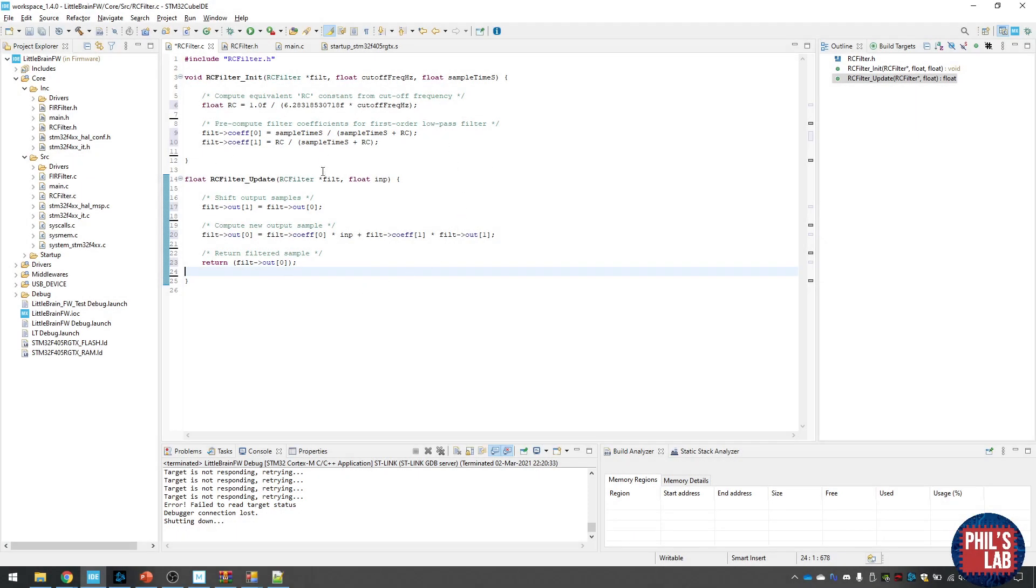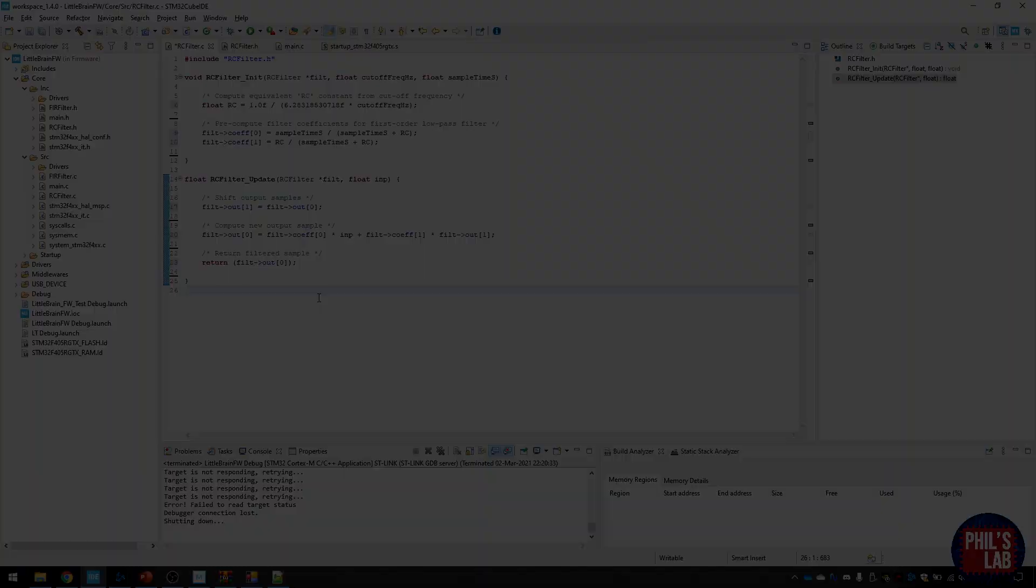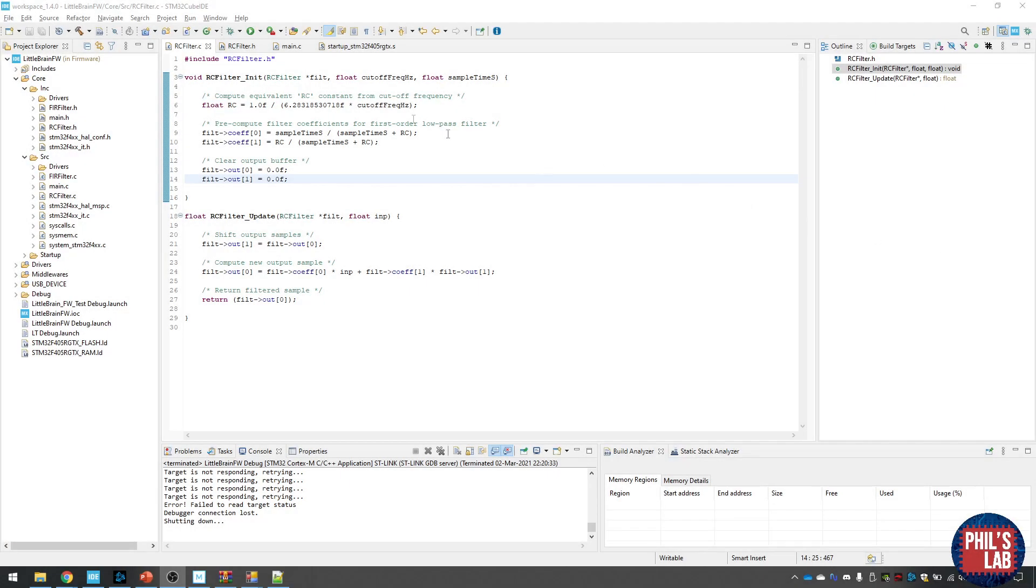Now I'm writing all this quite explicitly. There are some things you can make easier or simplify or make a bit nicer. But just for clarity's sake, I've written like this. And that's pretty much all we have to do. One more thing which we should do in our initialization function is actually clearing the output buffer. So making sure our output array is set to 0 before we actually do any filtering updates.